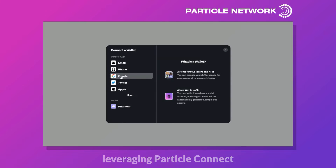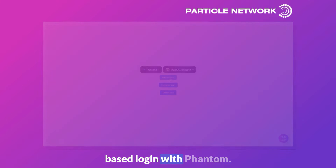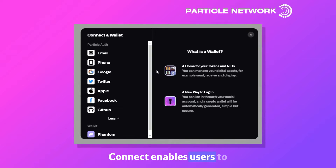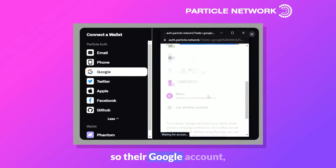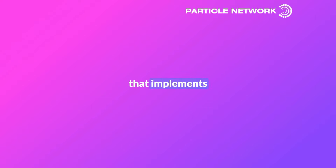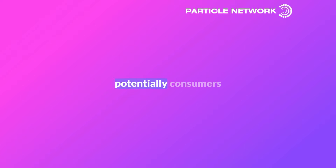In just 10 minutes, let's build this application leveraging Particle Connect to facilitate both Web2-based login with Particle Auth, as well as Web3-based login with Phantom. Particle Connect is our native modular wallet adapter for connecting to both EVM chains and Solana. It enables users to log in through either social login — Google, email, etc. — or through their Web3 wallet like Phantom. We'll be creating an application that implements Particle Connect to initiate a connection, retrieve balances, sign messages, and curate an experience accessible to both Web3 natives and Web2 consumers.